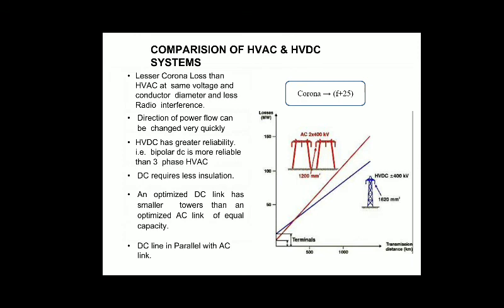The direction of power flow can be changed very quickly in a DC system. In AC, you might ask — what is the meaning of changing the direction of power flow? But remember, there is also reactive power, and we are talking about active power flowing from the generating station to the load and vice versa.